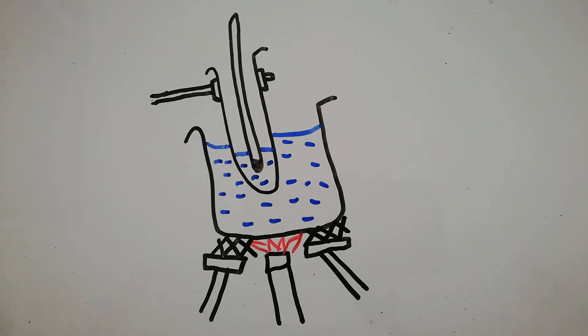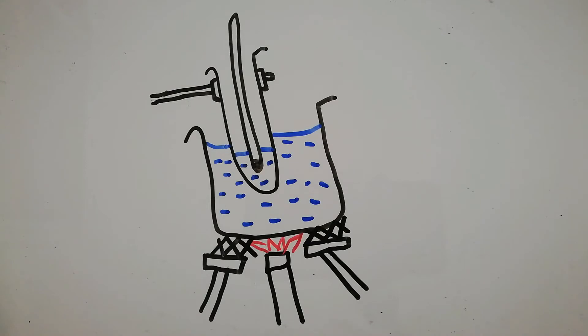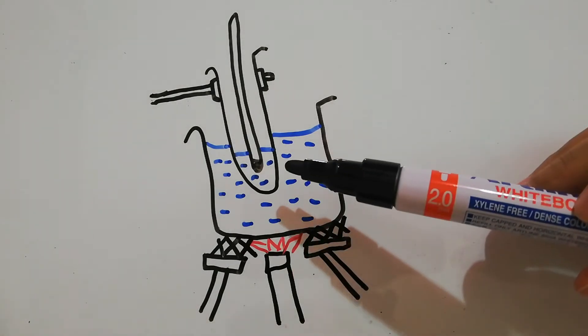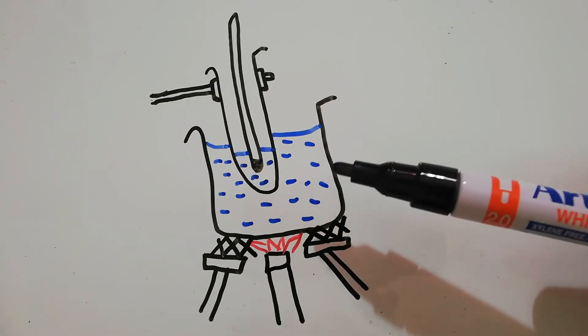So we started with the heating first. This is the apparatus for heating naphthalene. As you can see, there's a thermometer which is a little bit bent. There's naphthalene in the test tube and also the bath water here.